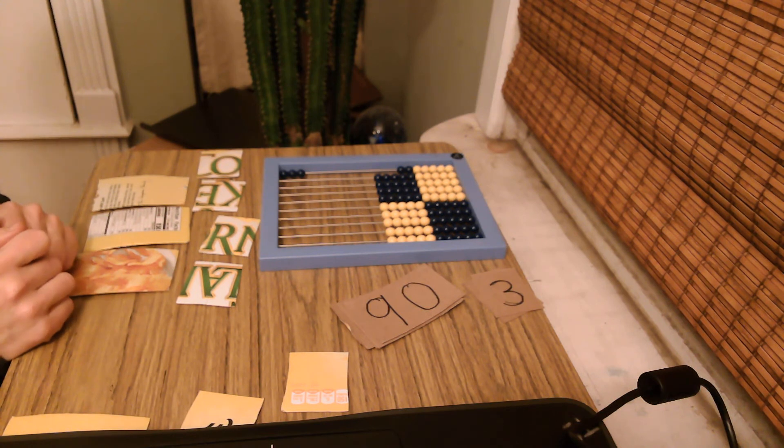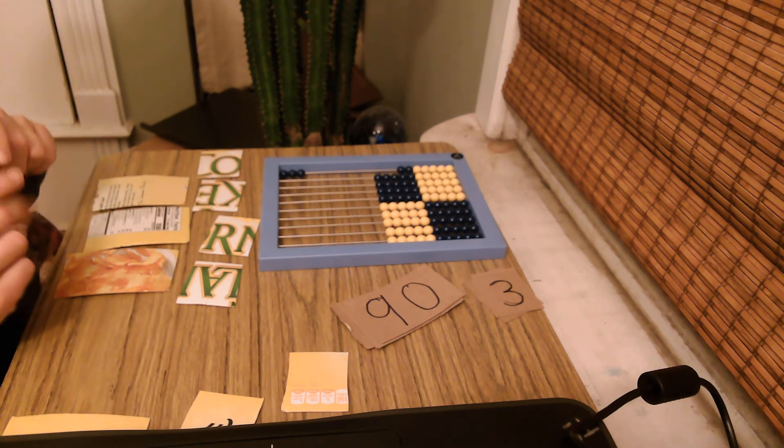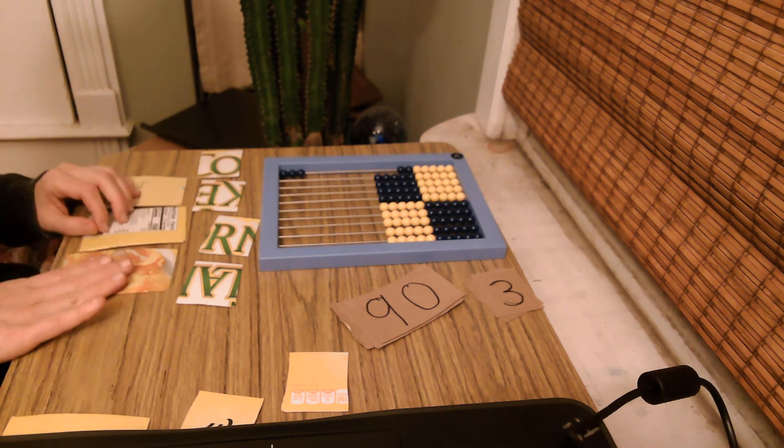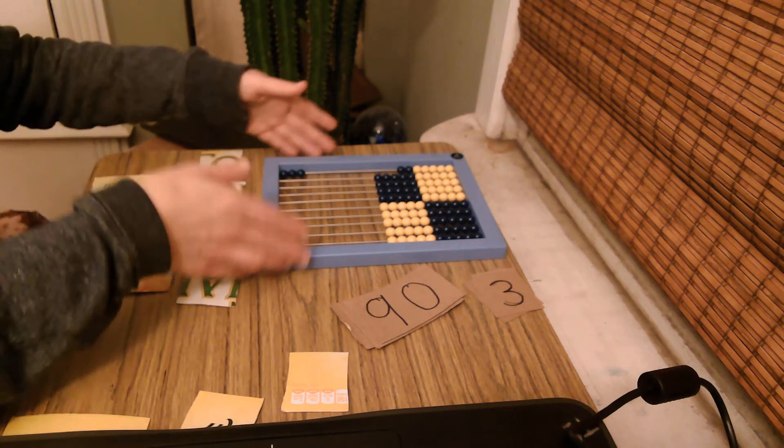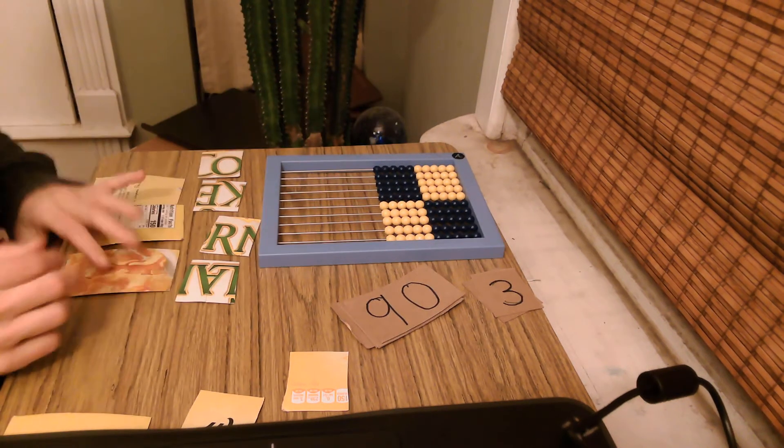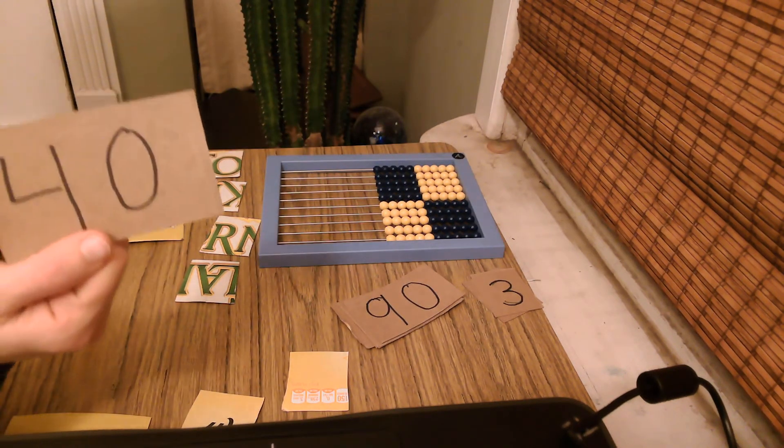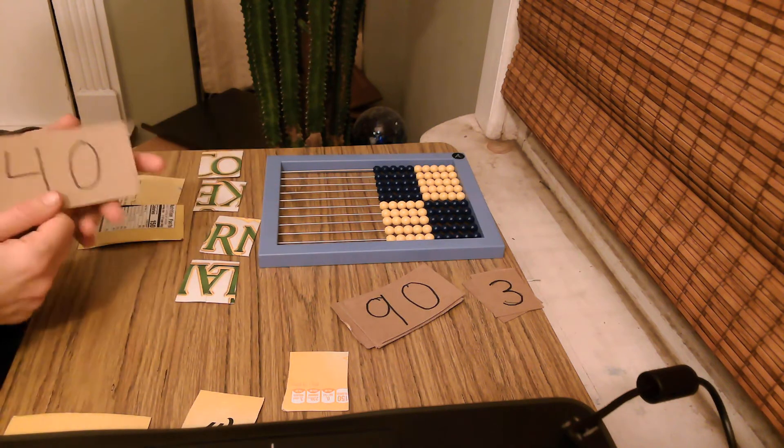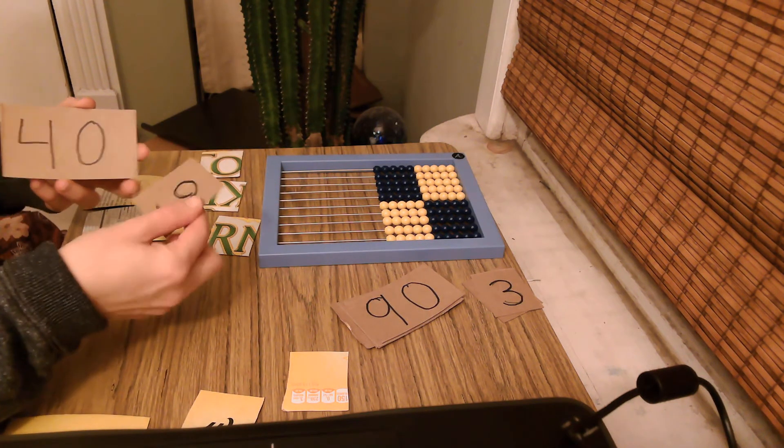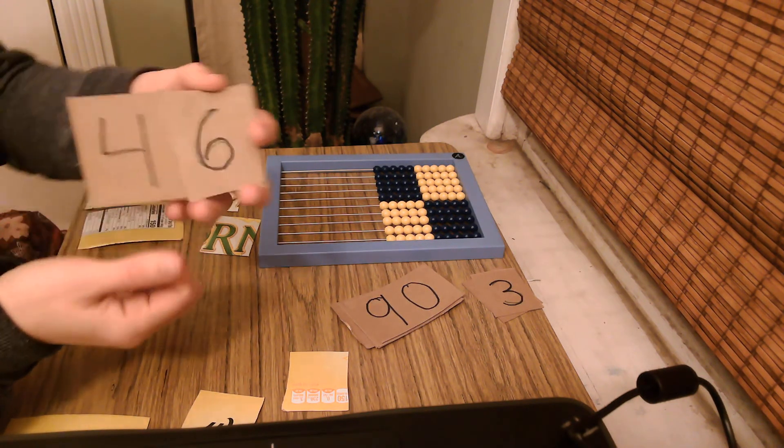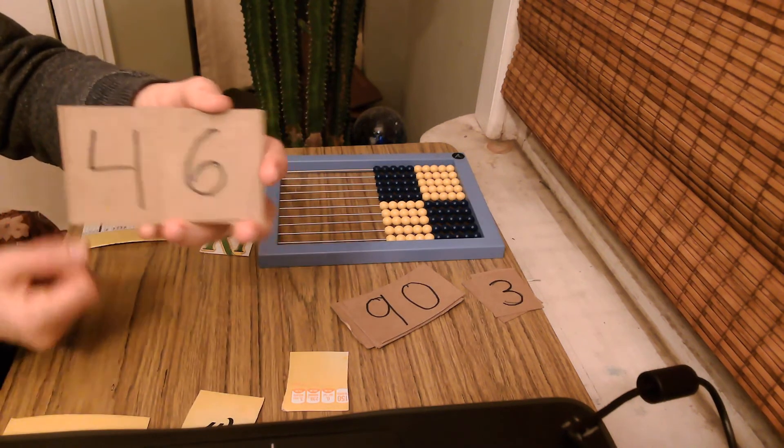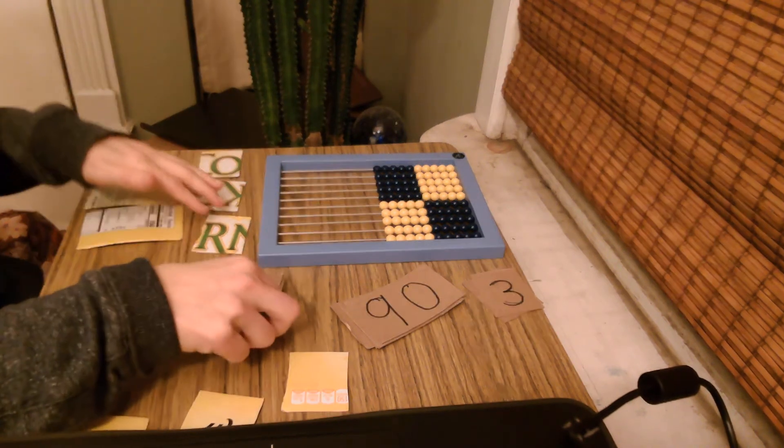Now, if this felt really easy to you, then to make it more exciting, you can pick a tens card and a ones card. Let's try that. How many tens is that? Four tens and six ones. Can I make four ten six? This is more challenging.